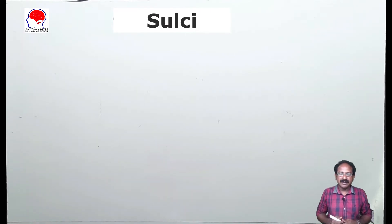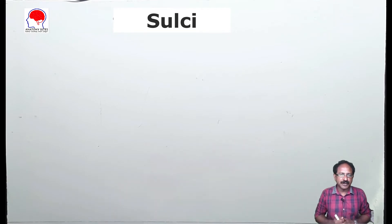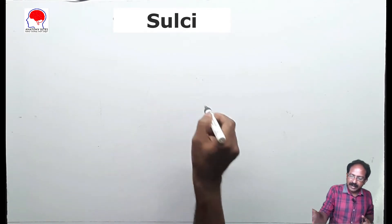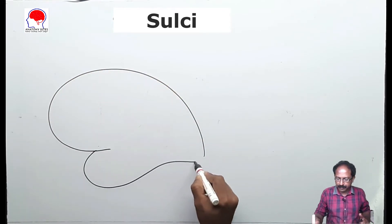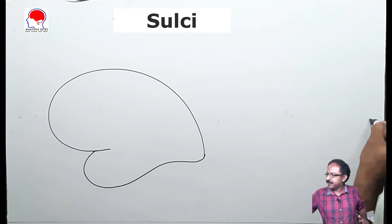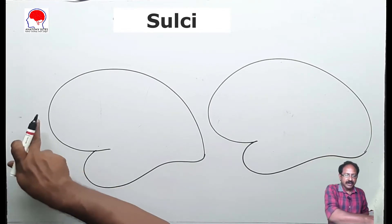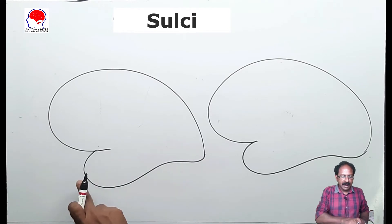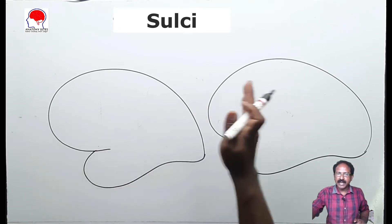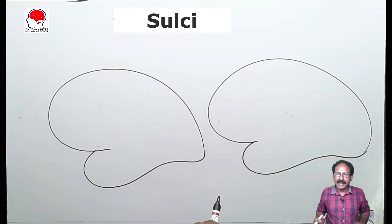In this session we will begin with the sulci present in the superlateral surface as well as the medial surface of the cerebral hemisphere at a time. Here is the outline of the cerebral hemisphere. When you draw, this has a frontal lobe, an occipital lobe and a temporal lobe. I have drawn the same outline for the superlateral surface as well as the medial surface. This may be easy to draw rather than drawing a mirror image to show the other surface.